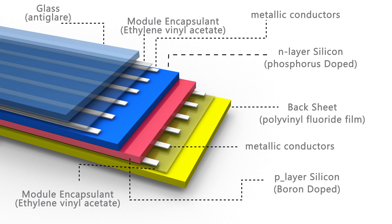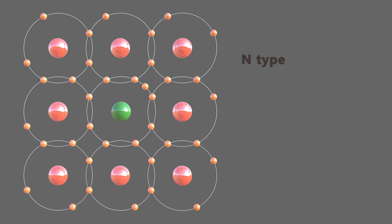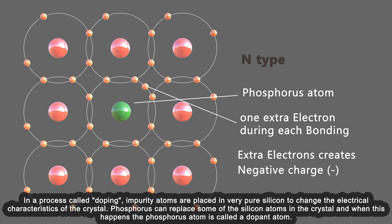Now we take a look at the area between n-layer and p-layer. I want to show you how a silicon crystal grid is doped in n-layer and p-layer. In a process called doping, impurity atoms are placed in very pure silicon to change the electrical characteristics of the crystal.